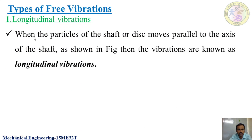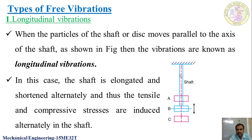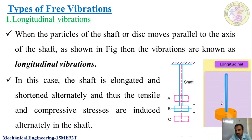First let us see longitudinal vibrations. When the particles of a shaft or a disc move parallel to the axis of the shaft, as shown in the figure, these vibrations are known as longitudinal vibrations. When the shaft moves parallel to the axis of the shaft, that movement is said to be longitudinal vibrations. In this case, the shaft is continuously elongated and shortened alternatively. You can see the animation of longitudinal vibrations — the disc is moving parallel to the shaft. Such a kind of vibration is said as longitudinal vibrations.